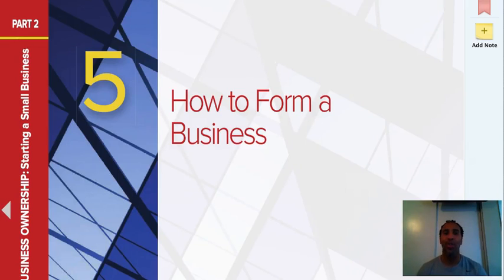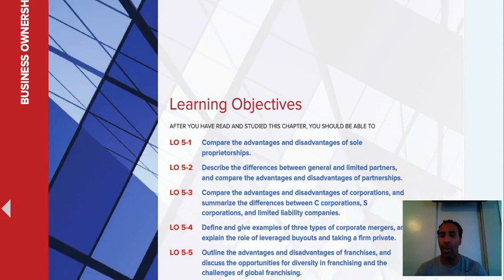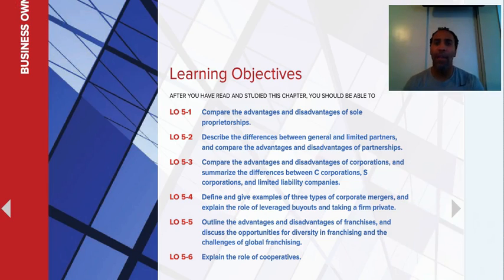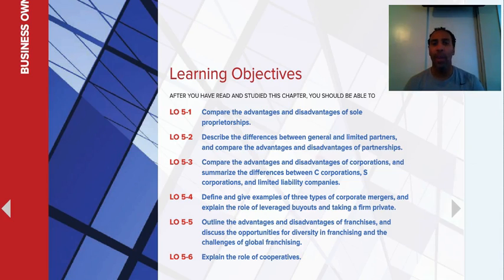Hello class, this is Demetrius Wilson and this is Business 101. We are now on chapter 5: how to form a business. Our learning objectives are to compare the advantages and disadvantages of sole proprietorships, describe the differences between general and limited partners, compare the advantages and disadvantages of partnerships, compare the advantages and disadvantages of corporations, define and give examples of the three types of corporate mergers, outline the advantages and disadvantages of franchises, and explain the role of cooperatives.